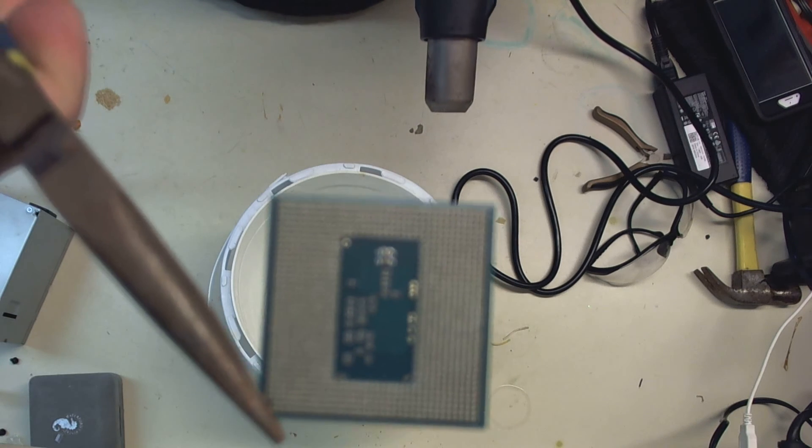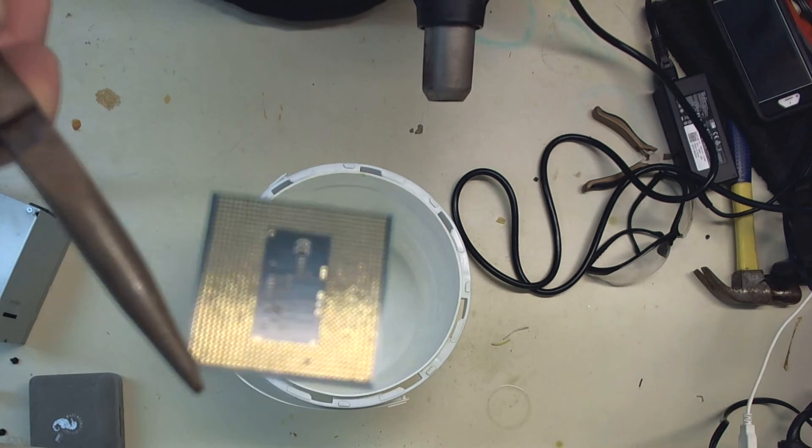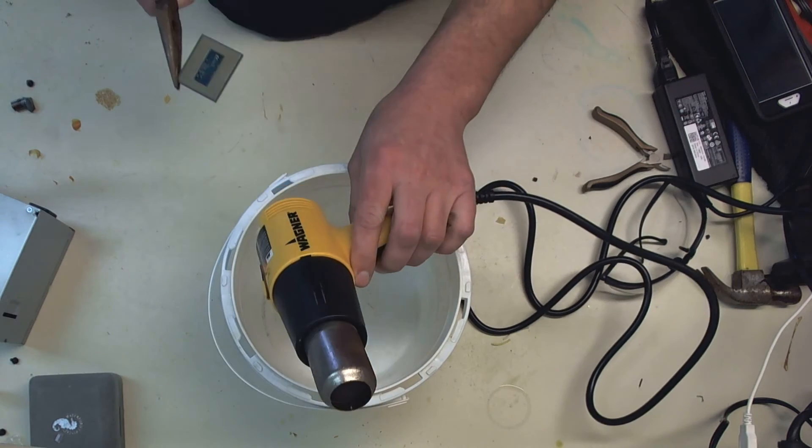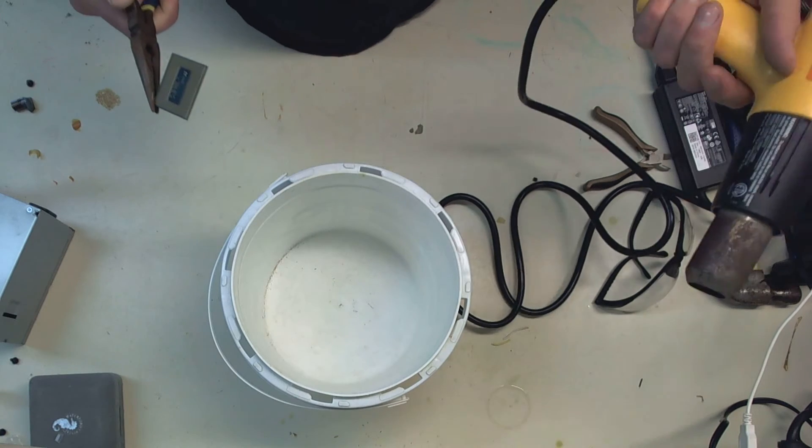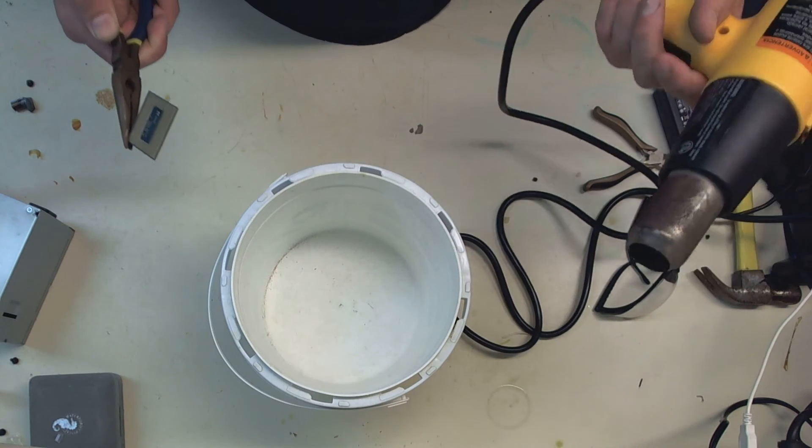And what I'm going to do is I want to take these pins, these gold pins off of this processor. So what I'm going to use to do that is just a standard heat gun. You can get these at Lowe's, Home Depot, like 25 bucks.